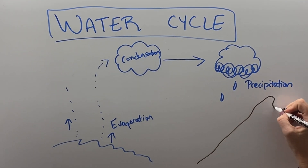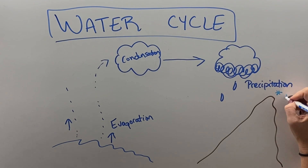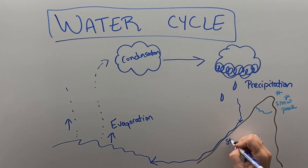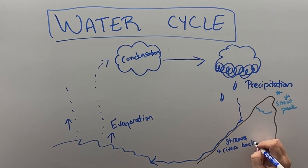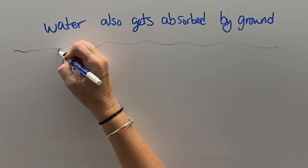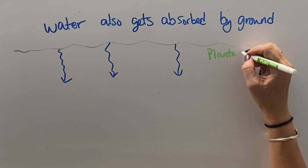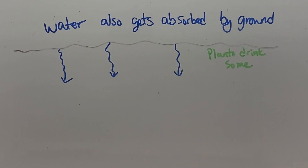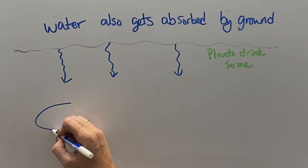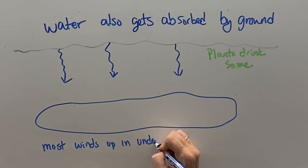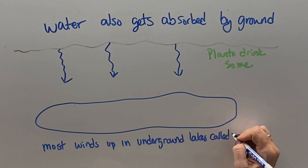The precipitation can be water or snow, and it falls on the ground. If it falls at high elevation, sometimes it'll turn into snowpack and then eventually turns into streams and rivers and goes back to the ocean. Some of the water also gets absorbed into the ground — a lot of that will get used by plants, and the rest filters down through all the layers of soil to eventually collect into underwater lakes called aquifers.